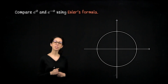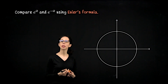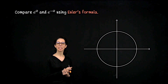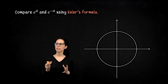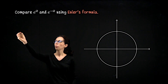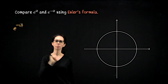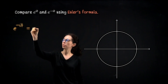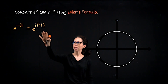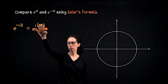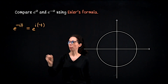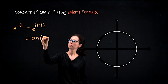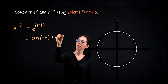We just saw that e to the it equals cosine of t plus i sine of t. What happens if we adjust it to e to the negative it? Using Euler's formula, we write e to the negative it as e to the i times negative t. Plugging into the formula, this becomes cosine of negative t plus i sine of negative t.